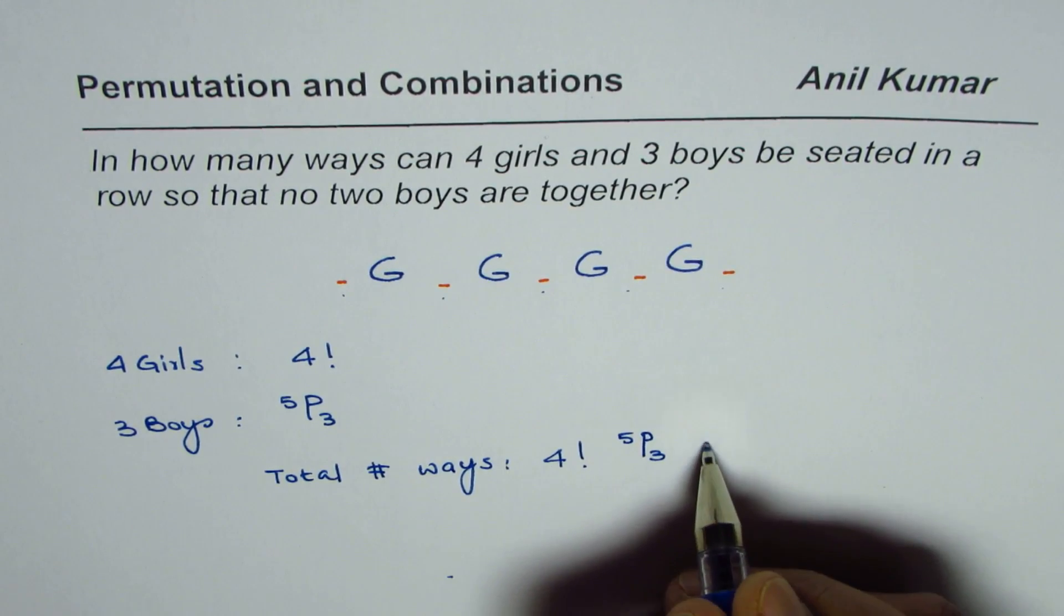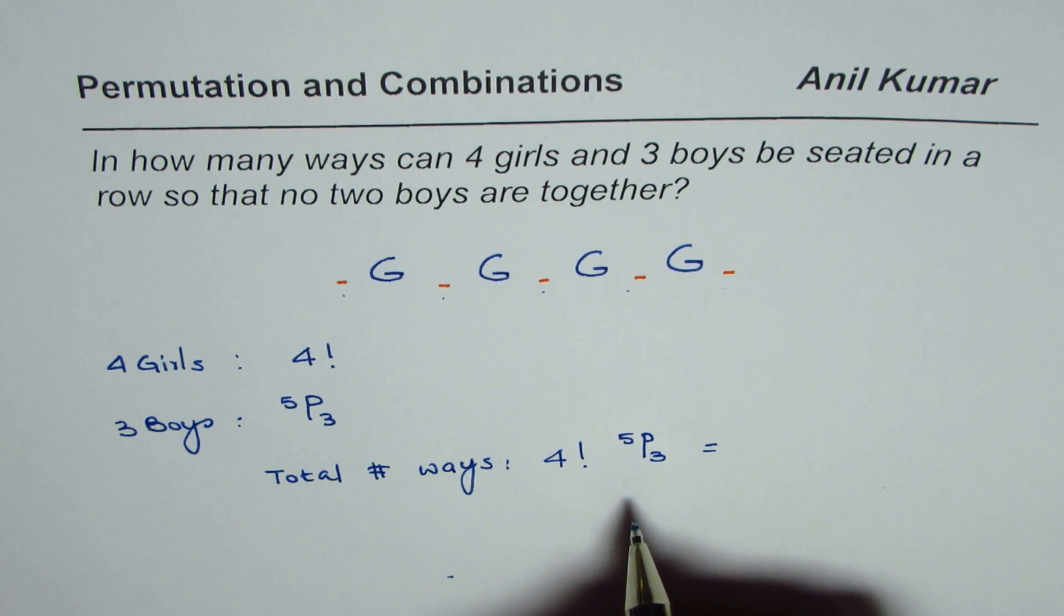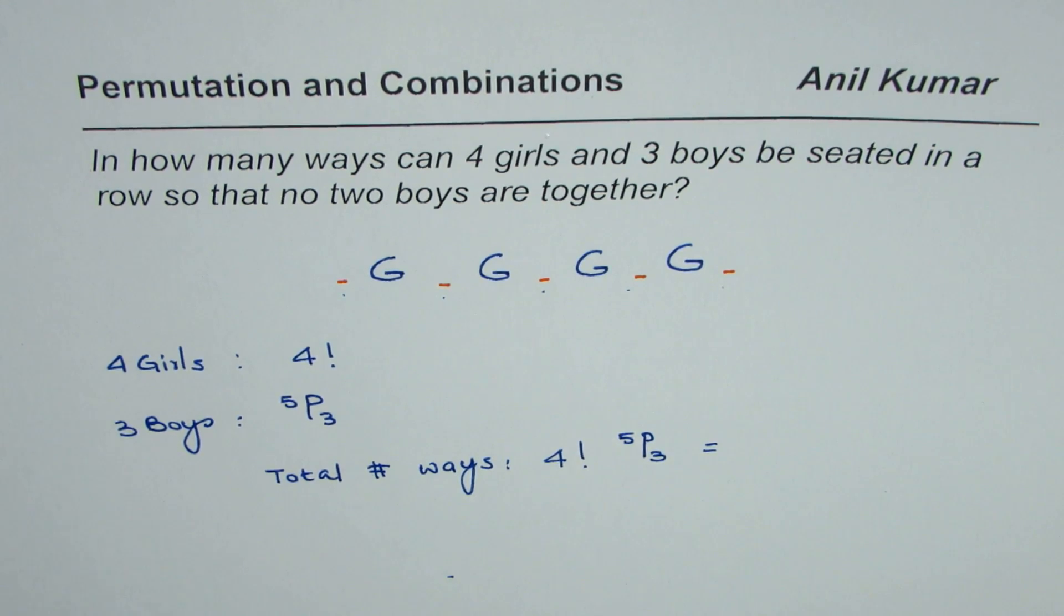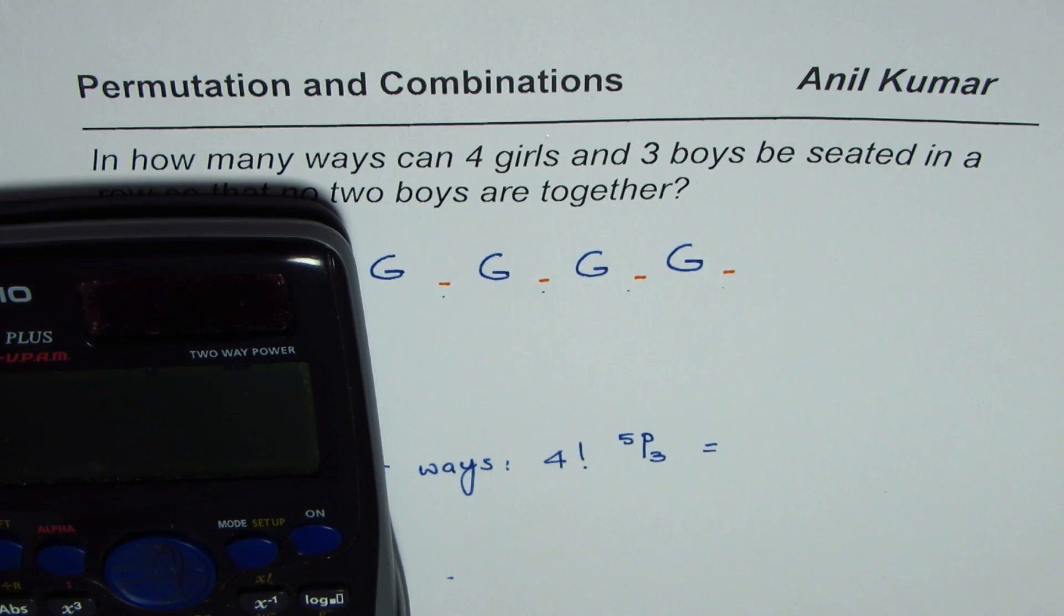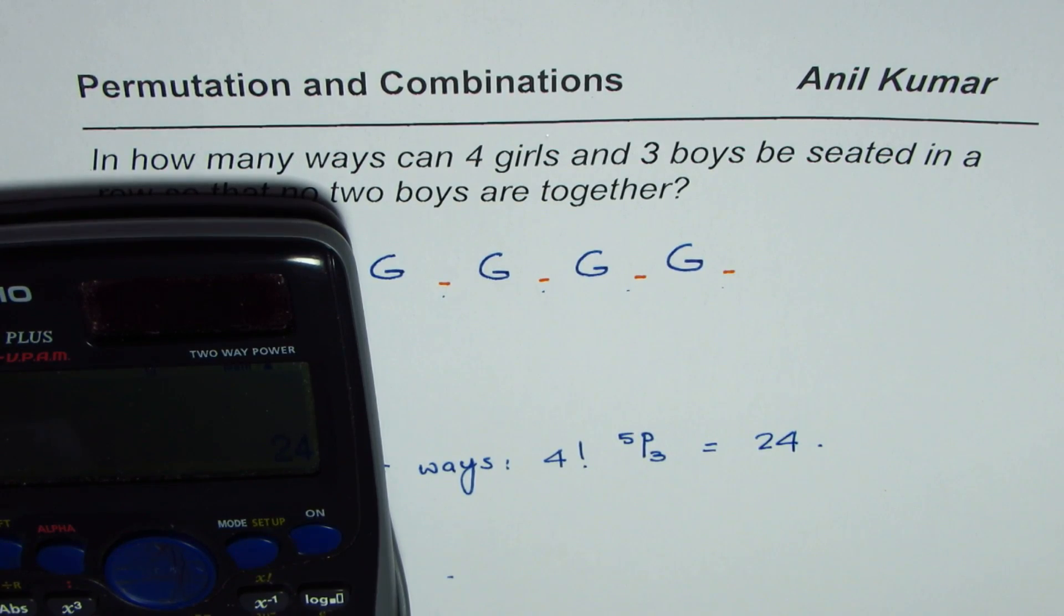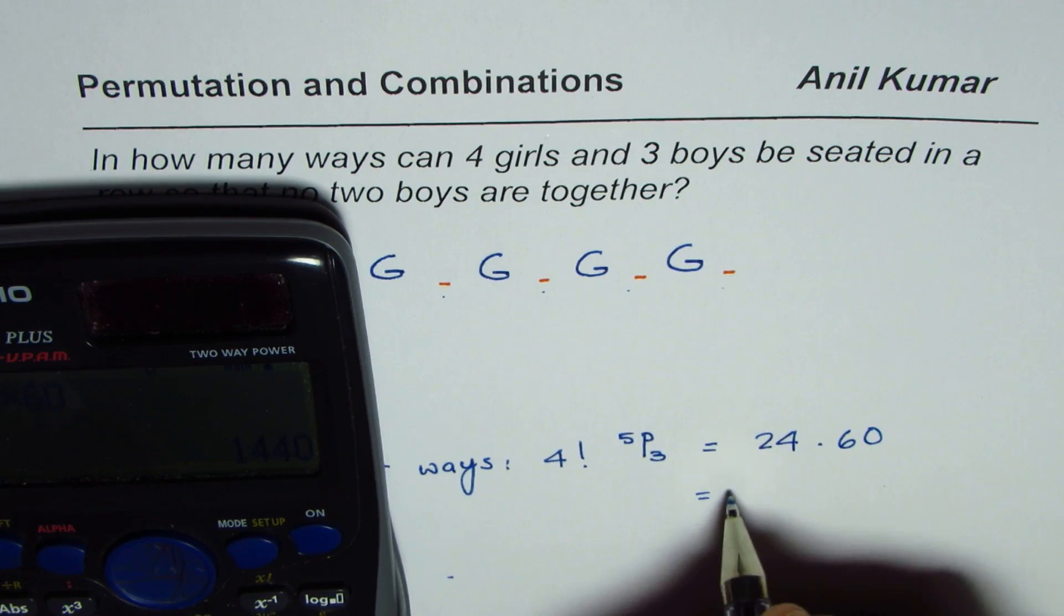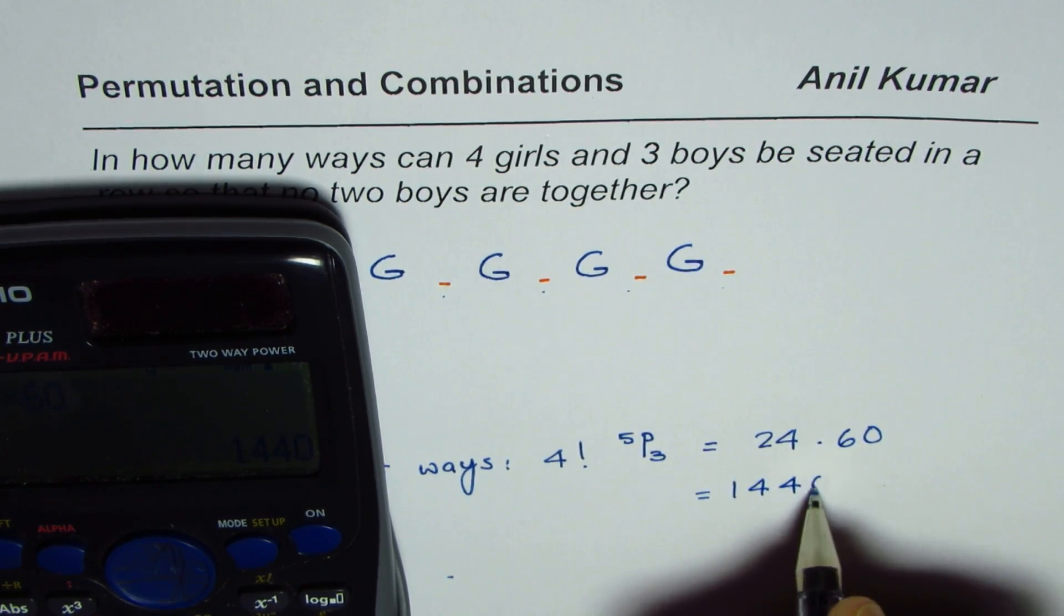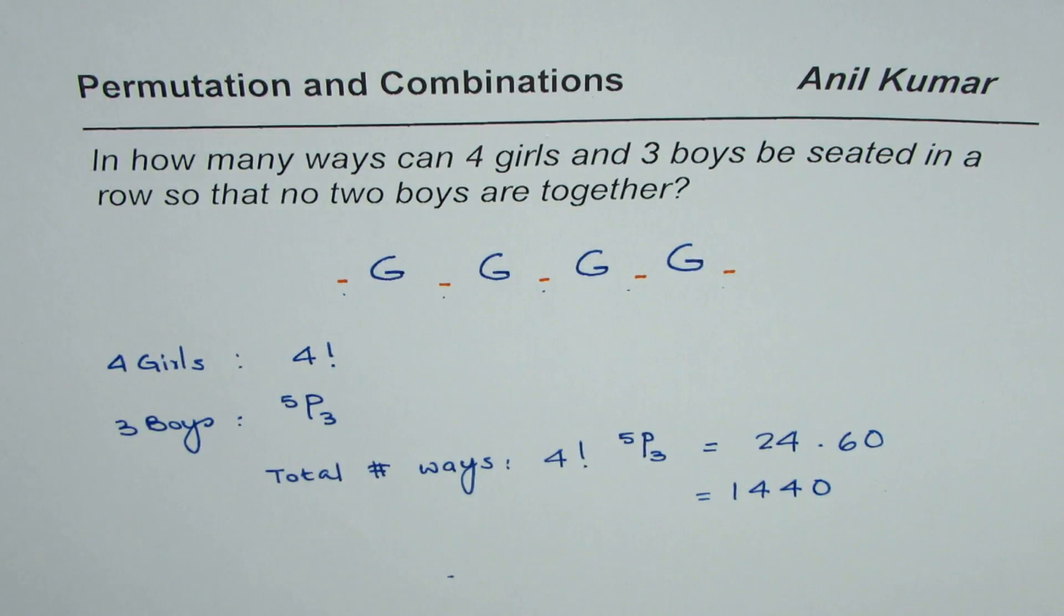Now we can use the calculator and find the answer. We have four factorial, which equals 24, times 5P3, which is 60. So it is 24 times 60, that gives you 1440. So the answer is 1440.